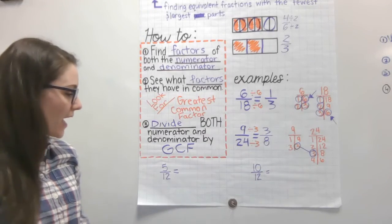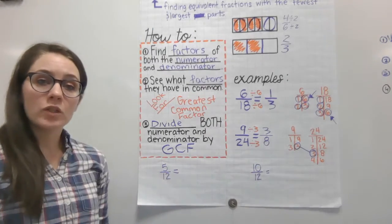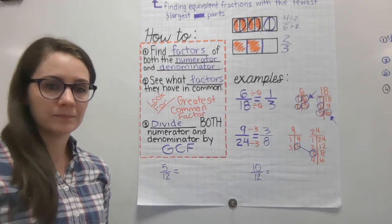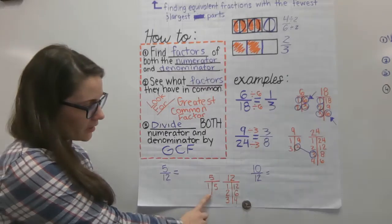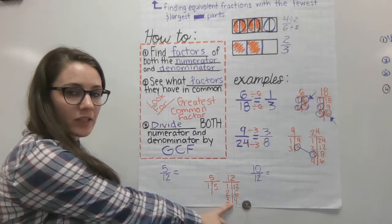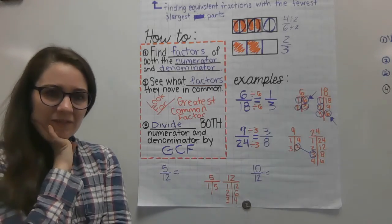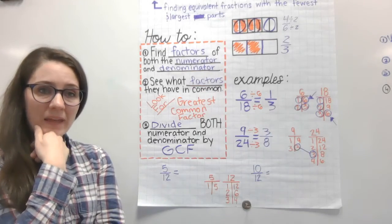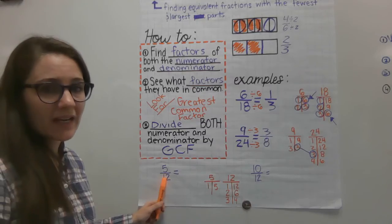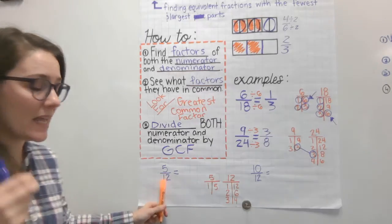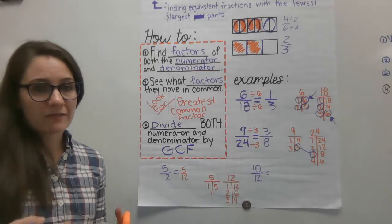Now I'd like you to try finding the simplified fraction for 5/12 and for 10/12. For 5/12, we find all the factor pairs: 1 and 5 for the numerator, and the factor pairs for 12. When I look at these, I don't have any common factors other than 1. That actually means that 5/12 is already simplified — I cannot combine any pieces. So 5/12 is our simplified fraction.